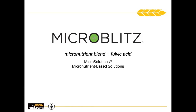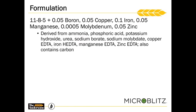Next, we're going to talk about Microblitz. Microblitz is a micronutrient blend which includes a fulvic acid. It's an 11-8-5 with boron, copper, iron, manganese, molybdenum, and zinc. All of these are in the EDTA form, which helps with tank mixability and compatibility.